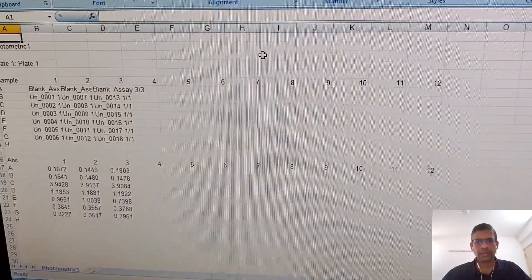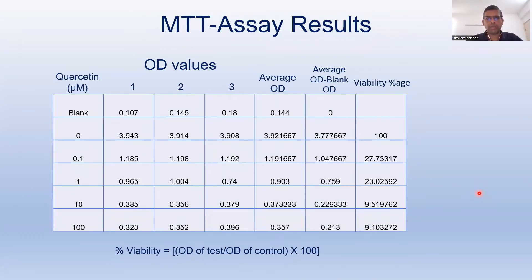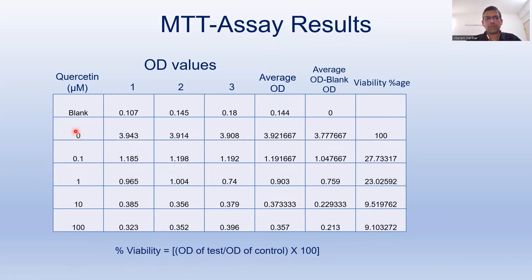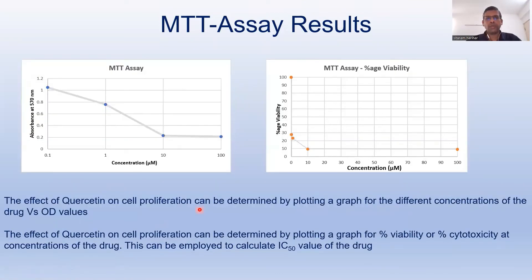The readings are transferred to an Excel sheet. Quercetin concentrations of 0.1, 1, 10, and 100 micromolar are tabulated along with the vehicle control and blank. OD values are recorded in triplicates and averaged. The blank absorbance is negated from the control and treatment readings. Using the formula — optical density of test divided by optical density of control multiplied by 100 — we calculate percentage viability. At no treatment the viability is 100%, and it drops drastically as quercetin concentration increases.